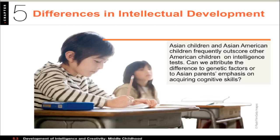Lower-class American children tend to attain IQ scores 10 to 15 points lower than those of middle and upper-class children. African American, Latin American, and Native American children all tend to score below the norms for European Americans, while Asian and Asian American students often perform better. The explanations for these differences are often complex, tied to opportunities and the support for academic achievement in each group, and the recognition that group differences exist serves as a starting point for that broader conversation.